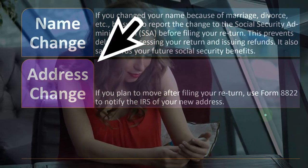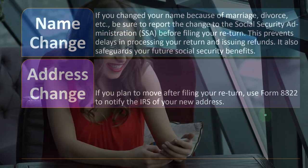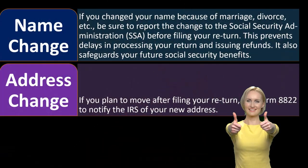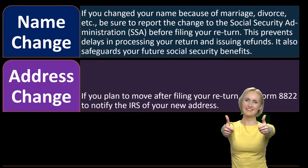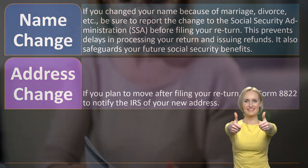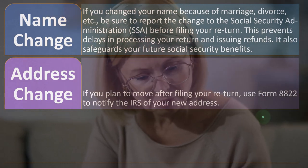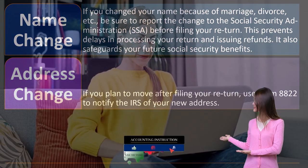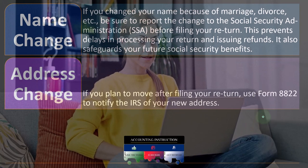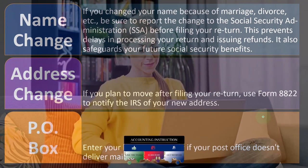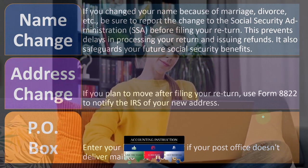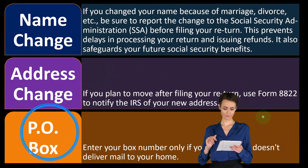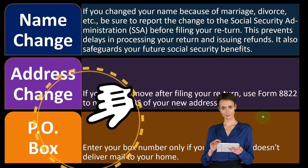Address change: if you plan to move after filing your return, use Form 8822 to notify the IRS of your new address. If you're getting a paper refund check mailed to you, a moved address will cause a problem. Even if you have direct deposit, it's best to notify the IRS where you are because they like to correspond by mail. Also, enter your P.O. box number only if your post office doesn't deliver mail to your home.